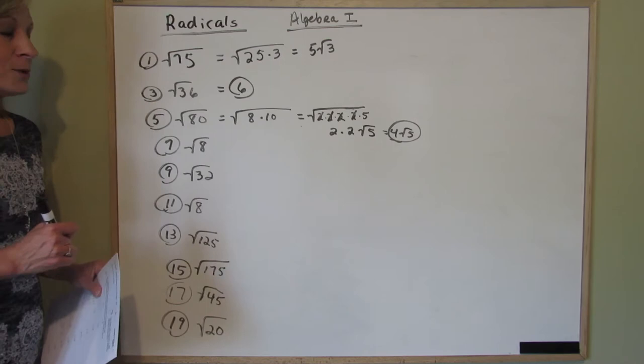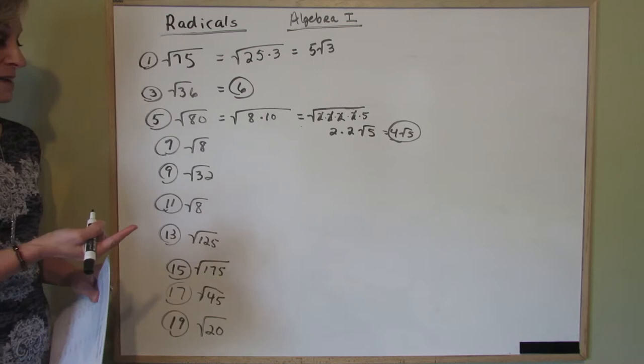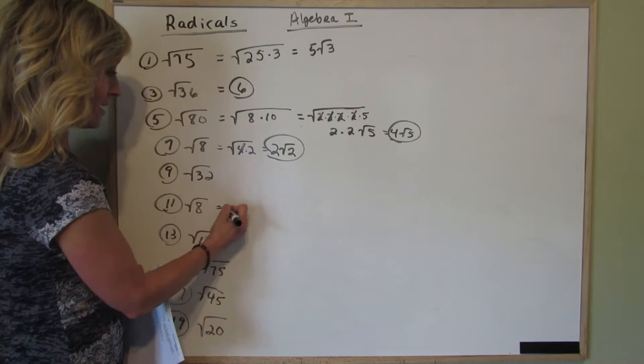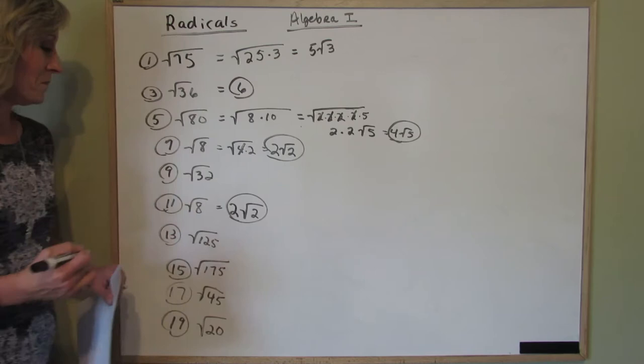Maybe you noticed I didn't make up this worksheet. So number 7 and number 11 happen to be the same thing, the square root of 8. Well we know 8 is 4 times 2. The square root of 4 is 2, and you're left with a 2 underneath. So there you have two answers. 7 and 11 are both 2 square roots of 2.